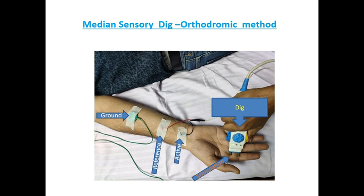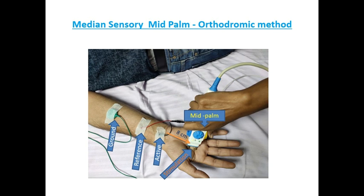This can be done in two methods: antidromic and orthodromic technique. The first one is the orthodromic technique. The stimulating electrodes are placed on the median nerve at the wrist, and the first response is recorded over the index finger, and the second response is recorded over the mid-palm.